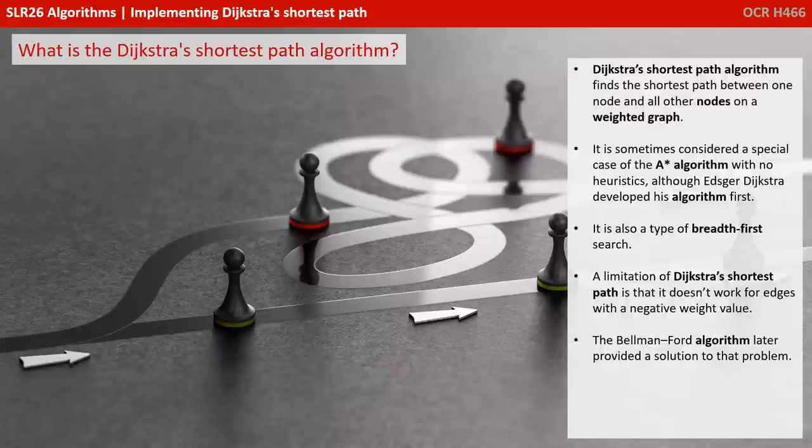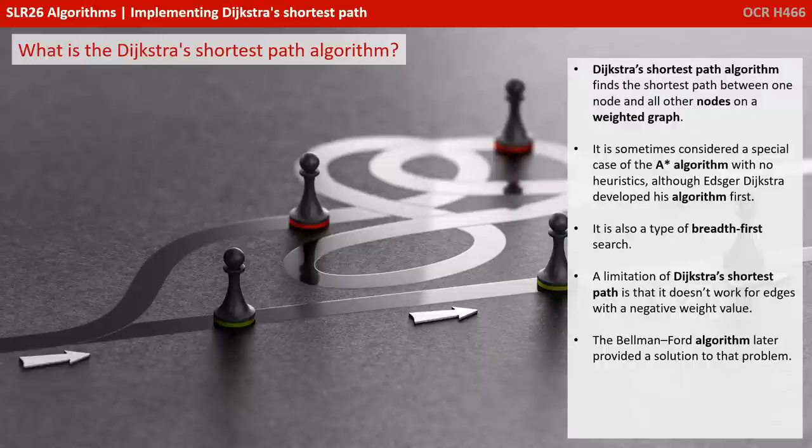Dijkstra's shortest path algorithm finds the shortest path between one node and all other nodes on a weighted graph. It is sometimes considered a special case of the A-star algorithm with no heuristics, although Dijkstra actually developed his algorithm first. It is also a type of breadth-first search. A limitation is that it doesn't work for edges with a negative weight value. The Bellman-Ford algorithm later provided a solution to that problem, but it's beyond the specification.